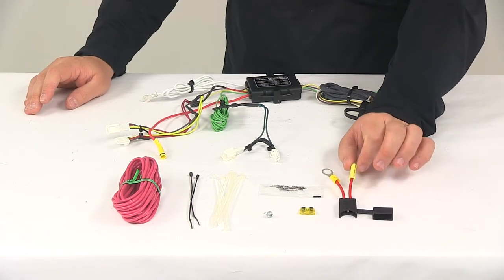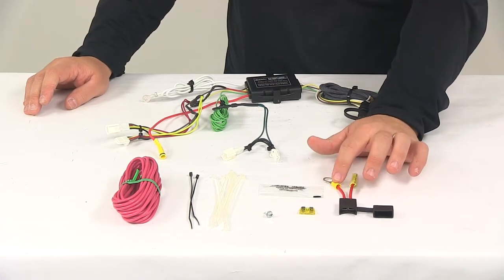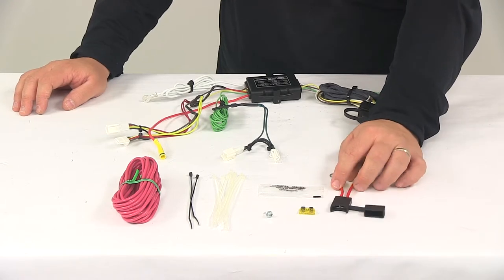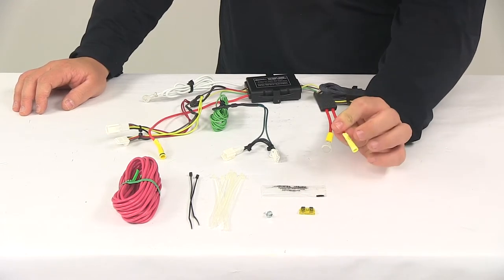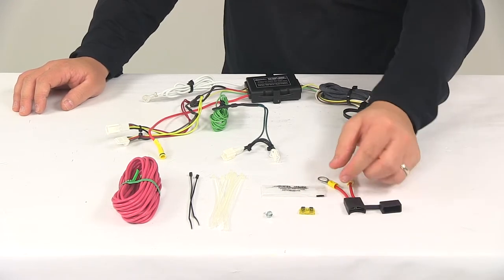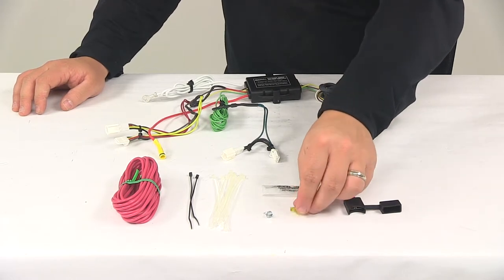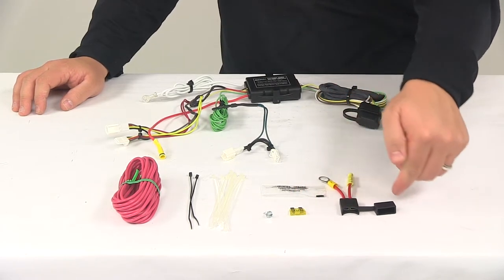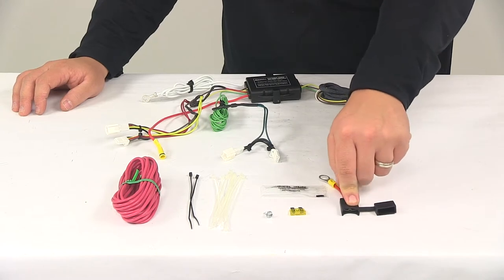It gets connected to one half of the fuse holder here with the butt connector. The other half of the fuse holder has a pre-attached ring terminal on there. That's going to get connected to the positive post of the vehicle battery. The unit does come with your 20 amp fuse. It goes directly in there and it's got the cap that comes over to keep it safe and protected.